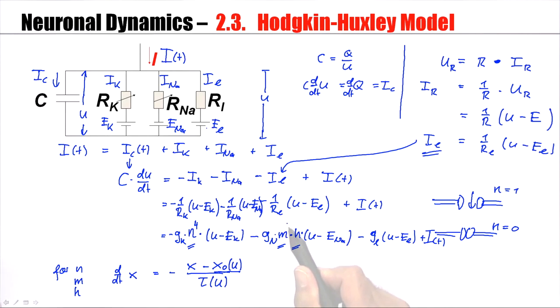Similarly, in order to describe the experiments, M is to the power of 3. So, C dU/dt, this is the first equation. The voltage is on the right hand side. So the evolution depends on the voltage. It also depends on N, on M, and on H.